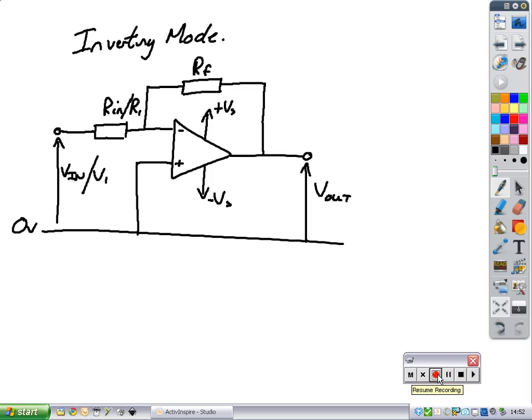Here is your diagram for an inverting mode amplifier. You've got your two resistors added on, your RN, or it can also be known as R1, your feedback resistor which comes back, and you've got your voltage in, or your voltage one at the start, and your voltage out, and you've still got your supply voltage added on to the operation amplifier to give you the gain that you need.